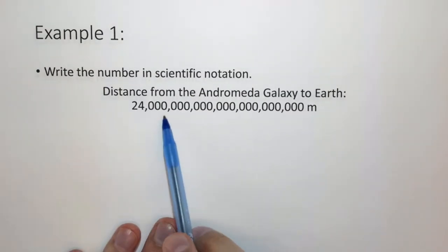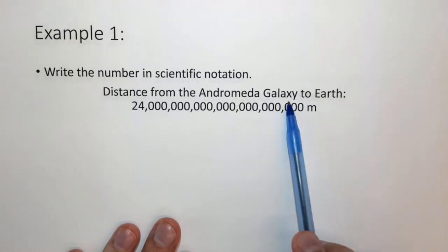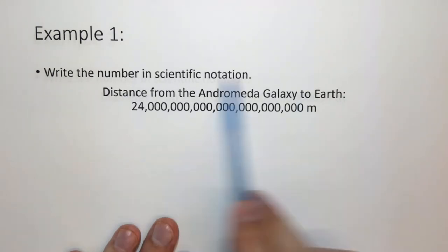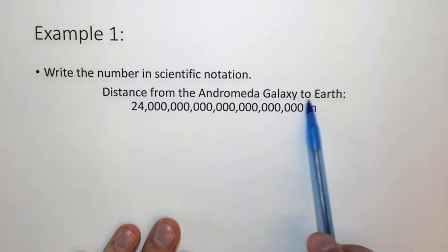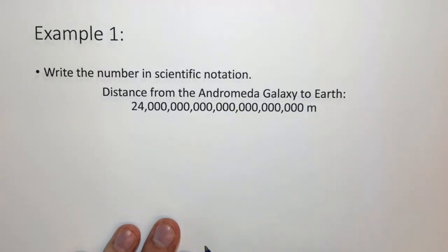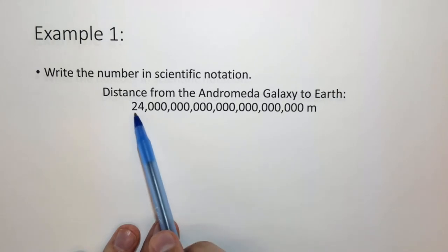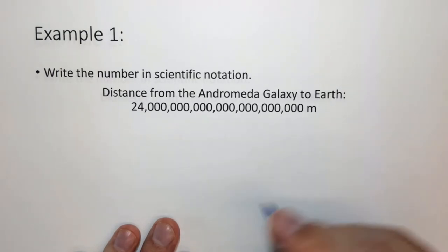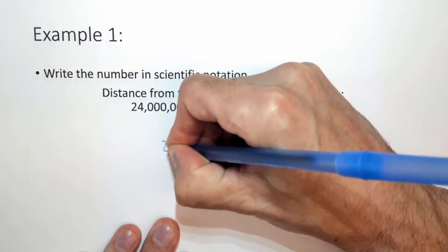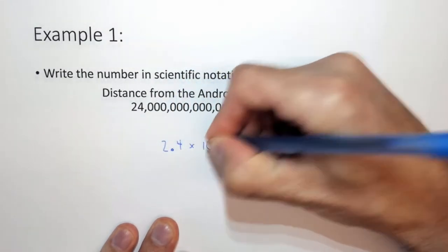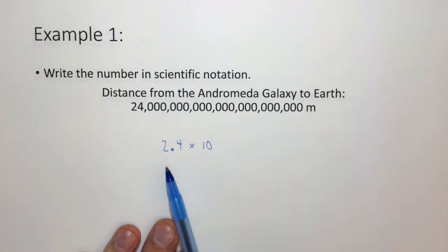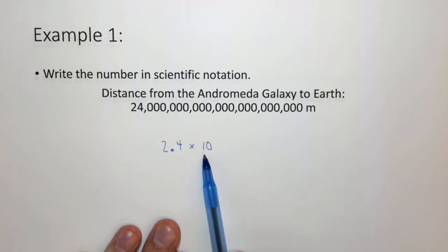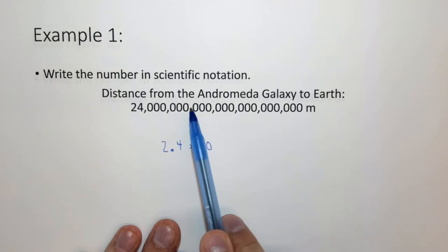Here we have a very large number — the distance from the Andromeda galaxy to Earth — which is 24 with a lot of zeros after it, in meters. For this large number we want to use scientific notation. We need to convert this into a number between 1 and 9.9 repeating, and that number is 2.4. The times-10 part tells us how many times we need to move the decimal place to make 2.4 into this huge number.